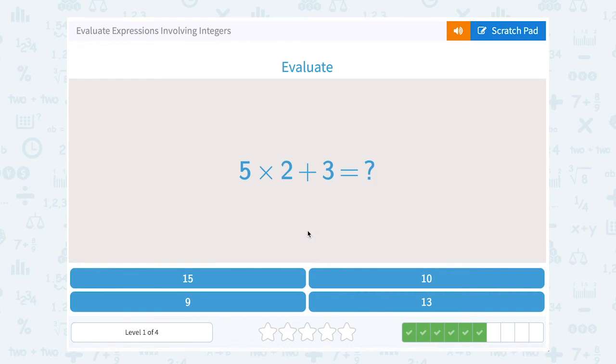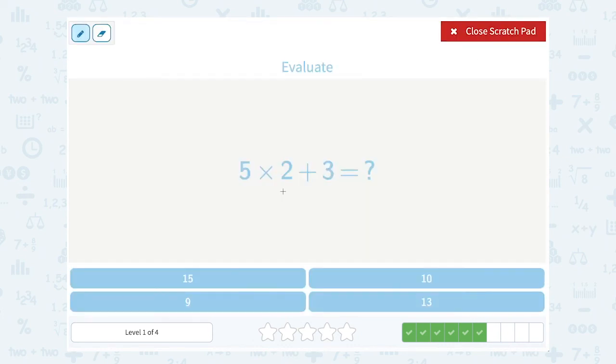5 times 2 plus 3. Well, order of operations tells me I need to multiply first before I can add. So I'm going to start by saying 5 times 2. That gives me 10, and then I can add the 3. 10 plus 3 gives me 13.